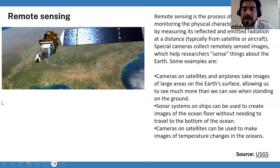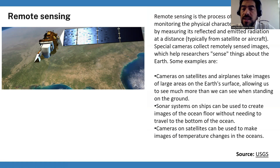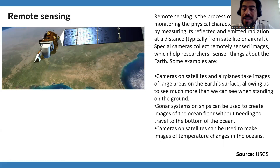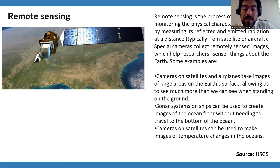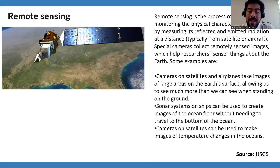What is remote sensing? It is the process of detecting and monitoring the physical characteristics of an area by measuring its reflected and emitted radiation at a distance, typically from satellite or aircraft. Special cameras collect remotely sensed images, which help researchers sense things about the Earth. Cameras on satellites and airplanes take images of large areas of Earth's surface, allowing us to see much more than we can see when standing on the ground. Some systems and cameras on satellites can be used to make images of temperature changes in the terrain or in the ocean.